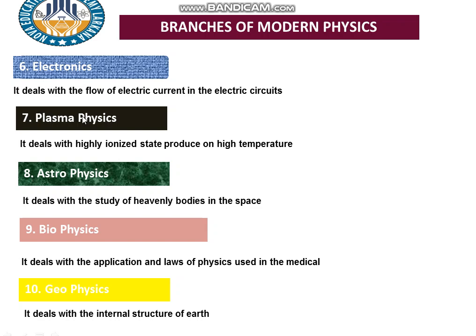The next branch is plasma physics. Plasma is actually the fourth state of matter. It deals with the highly ionized gaseous state produced at very high temperatures. Examples include the Northern Lights (Northern Hemisphere), the Sun — where gases produce high radiation — and plasma is formed in such high-temperature, high-radiation environments.